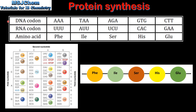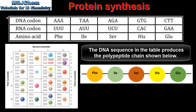Let's look at an example. In this table we have the DNA codon, the RNA codon, and the amino acid. If the DNA codon is AAA, then the RNA codon is UUU. Using this chart, we can see that this triplet code corresponds to the amino acid phenylalanine.